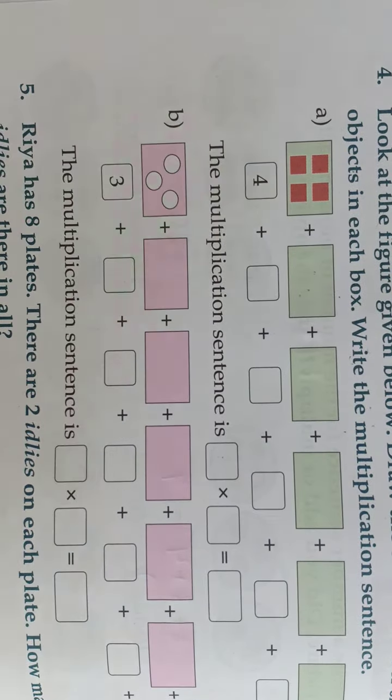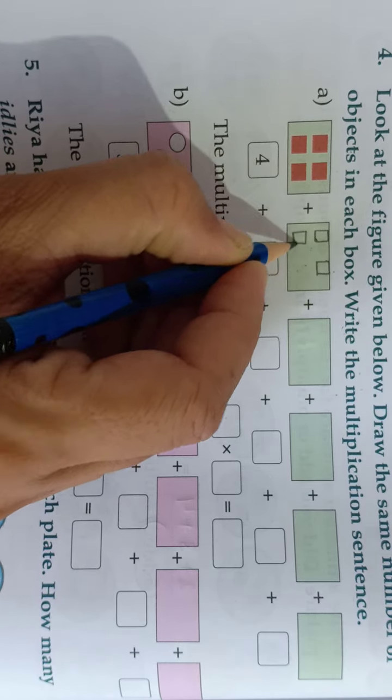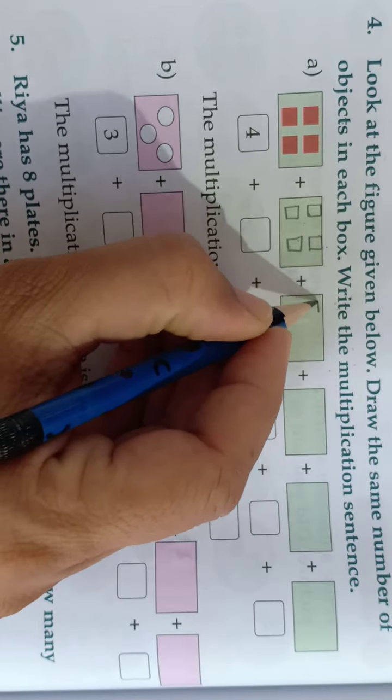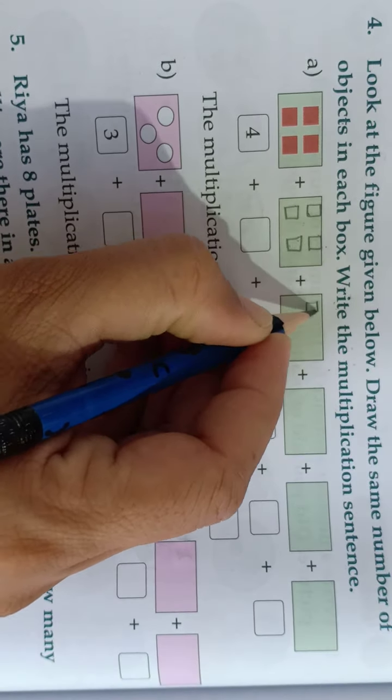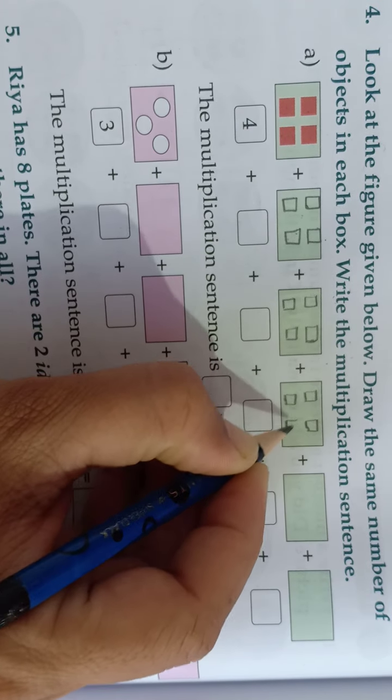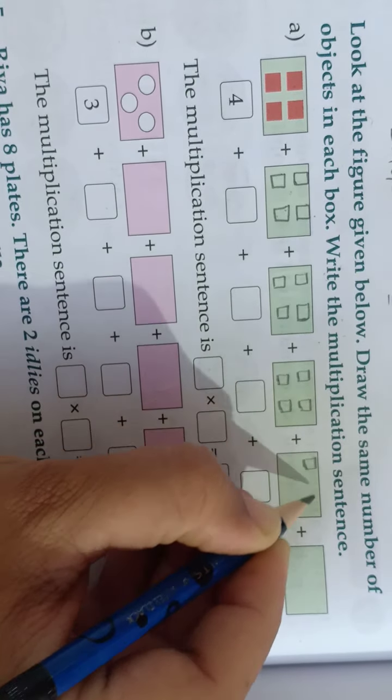I will do one for you. See how many objects are here? Four. So we will draw four square type boxes, small small squares. So in each box there are four. Drawn here.